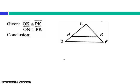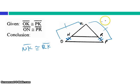Here we've got segment OK congruent to segment PK, and ON congruent to PR. Here, I have congruent segments, two sets of them. So, a conclusion I could make is that NK is congruent to RK. And my reason would be through subtraction.